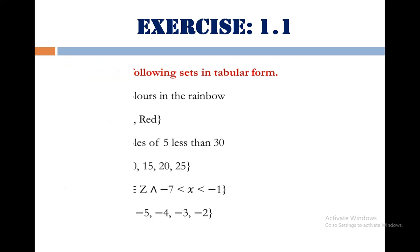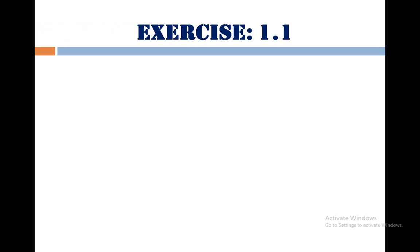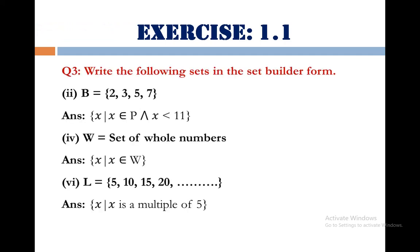We move towards the last question of the exercise that is question number 3. Its statement says write the following sets in the set builder form. Part number 2, B equals 2, 3, 5, 7. Looking at the shape of the elements, we are clear that these are the prime numbers. So, our answer is set of elements X such that X belong to P and X is less than 11.